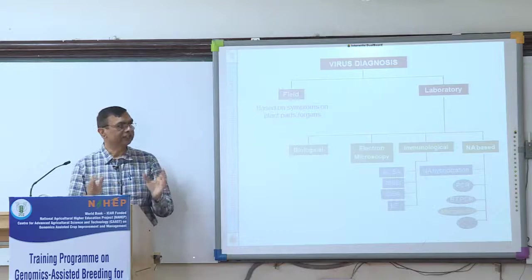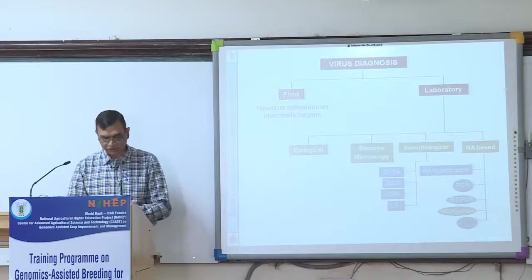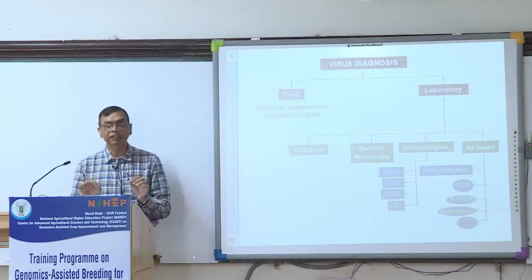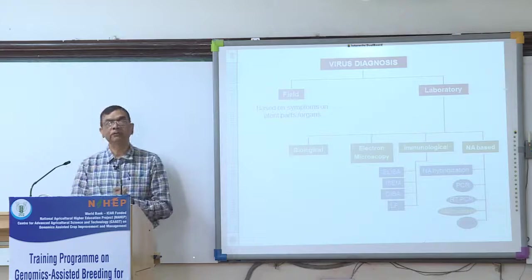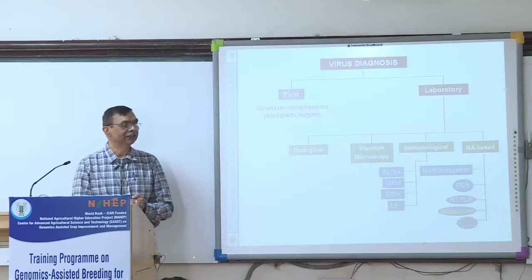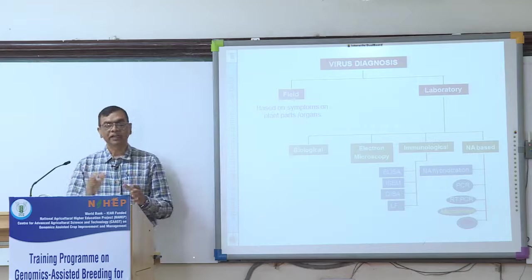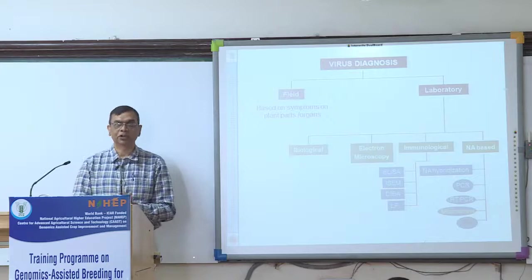To diagnose the virus infecting any crop in the field, there are various methodologies. One is field-based symptoms — based on the symptom, one can possibly say it is caused by a particular virus. There will be distinct symptoms. You might have seen the symptom of leaf curl disease in tomato, which is also caused by a Geminivirus, a double-stranded DNA virus. All these Begomoviruses are transmitted by whitefly in nature.